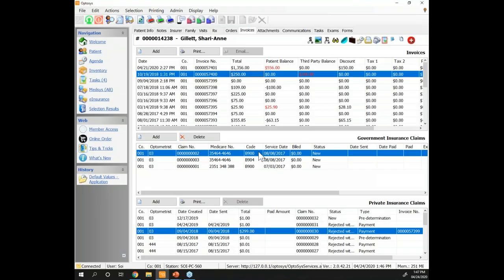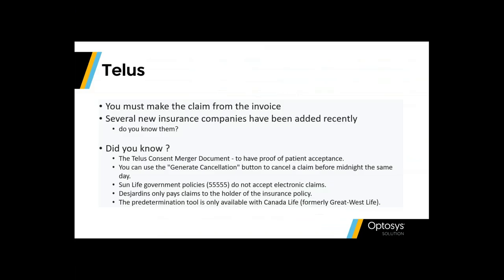To use the TELUS consent form, you'll need to define your address, city, province, and postal code in the mail merge settings once — after that it stays and all patient information is dynamically populated per patient. Regarding special cases: Sun Life government policies starting with 55555 will never be accepted through a third party like Optasys — it's a government decision. Desjardins only pays directly to patients, so even if you submit a claim, you'll never receive the money — you must collect full payment from the patient. Pre-determination is only available with Canada Life, formerly Great West Life.